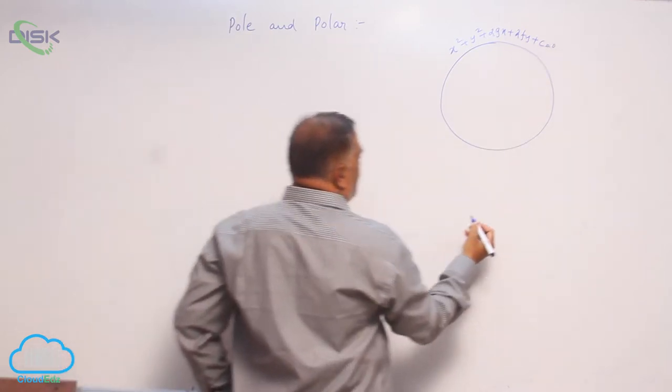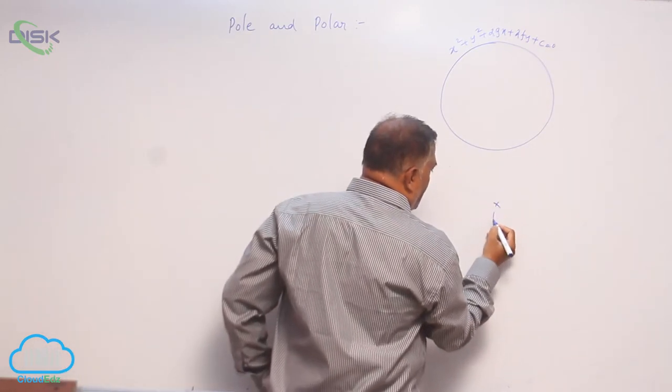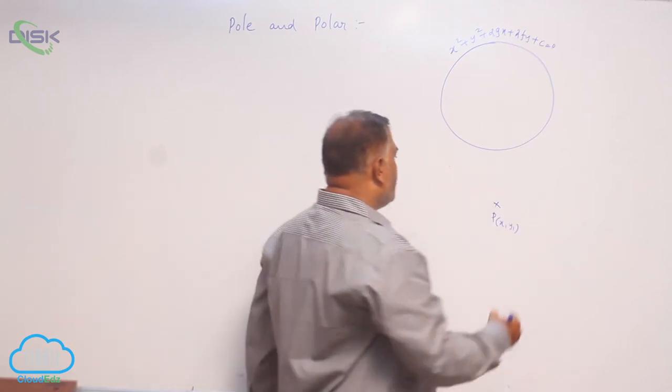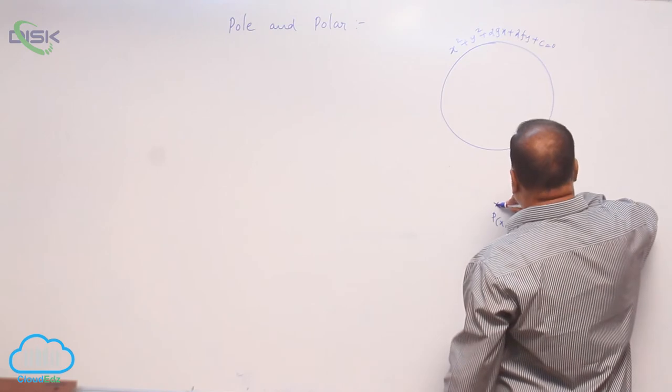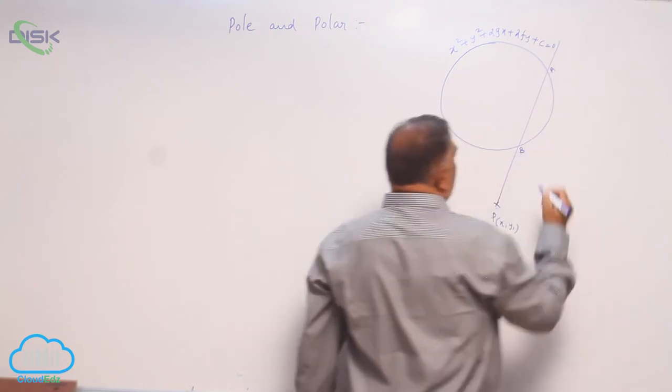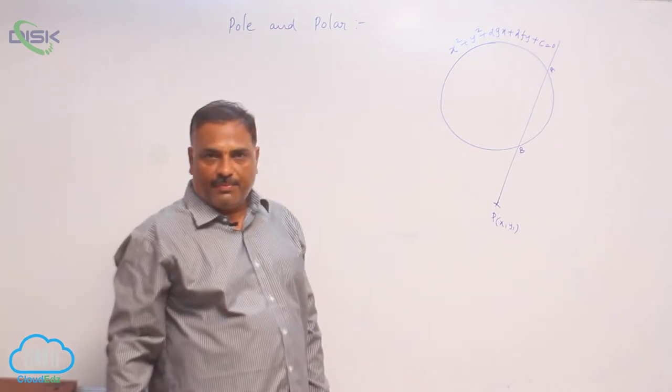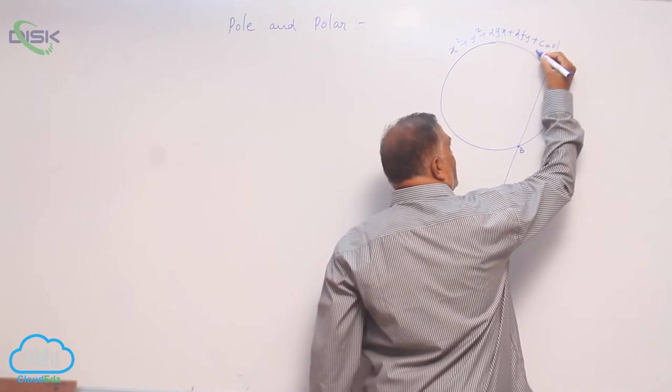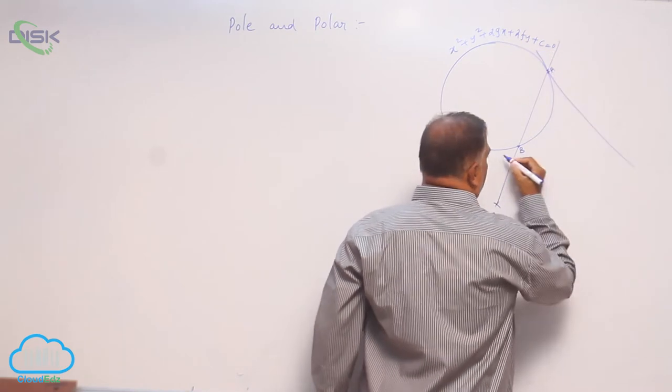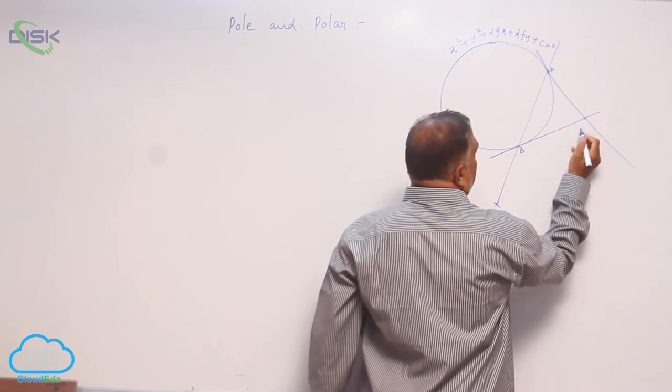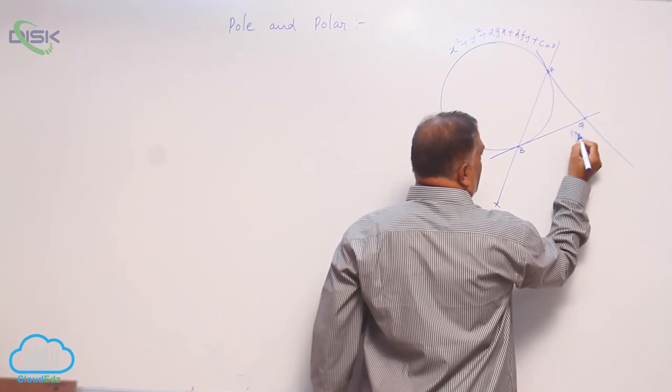Let us take a point P outside the circle, x1 comma y1. Through this point, you draw one secant line which meets the circle at two points A comma B. From this point, at points A and B, draw tangents to the circle like this, which intersect at some point Q, x0 comma y0.